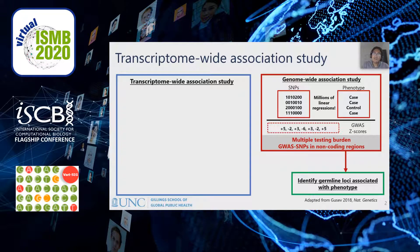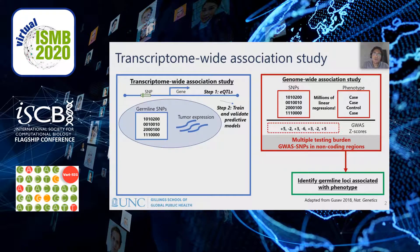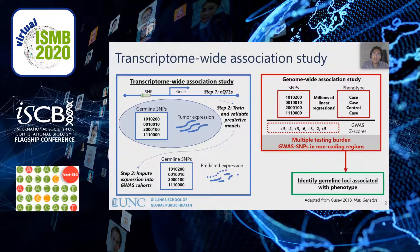In 2015 and 2016, TWAS was developed to expand on GWAS to address these issues. In TWAS, eQTL panels from relevant tissues are used to train predictive models of gene expression from SNPs in a local window around a gene. These models are used to impute expression in external GWAS cohorts that don't have access to transcriptomics. These imputed values represent the genetically regulated portion of gene expression and can be used to test for gene-trait associations. As a result, TWAS dramatically reduces the number of tests from millions of SNPs to thousands of genes, and it also aids in interpretability by mapping genetic variants to testing units that represent single genes.